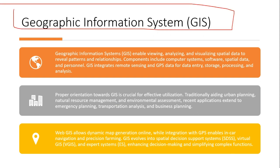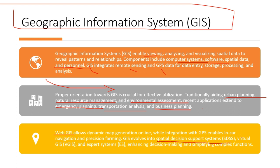GIS — Geographic Information System — allows viewing, analyzing, and visualizing spatial data to reveal patterns and relationships. Required components include a computer system, software, spatial data, and persons. GIS integrates remote sensing and GPS data for entry, storage, processing, and analysis. Applications include urban planning, natural resource management, environmental assessment, emergency planning, transportation analysis, and business planning. Web GIS enables dynamic online map generation, and GIS is evolving into spatial decision support systems (SDSS), virtual GIS (VGIS), and expert systems (ES).